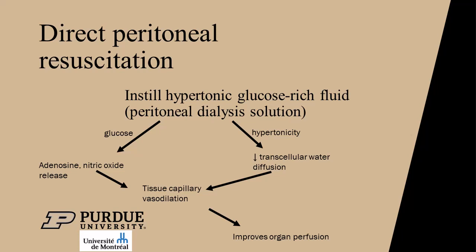The glucose and its breakdown products cause abdominal organ vasodilation, improving perfusion. Additionally, because the dialysate is hypertonic, it draws water out of the organs, reducing cellular edema and apoptosis.